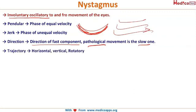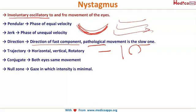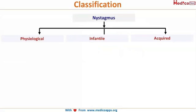The trajectory can be horizontal, vertical, or rotatory — three types. Conjugate means both eyes have the same nystagmus movement. There is also a zone called the null zone: the gaze position in which the intensity of the nystagmus is minimal and almost stops. This is called the null zone.